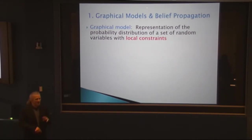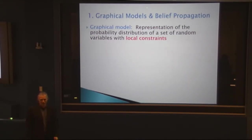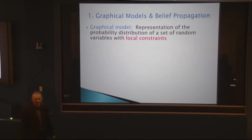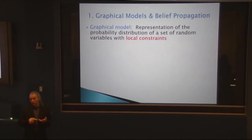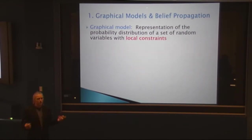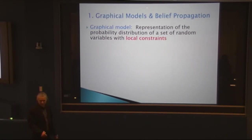For example, suppose I distribute colors on people in this room and put some constraints — say, having two blue shirts next to each other is illegal because I can't really tell if it's one or two people. So you put certain local constraints, and otherwise you have some probability distribution of colors, which we can model with a graphical model.